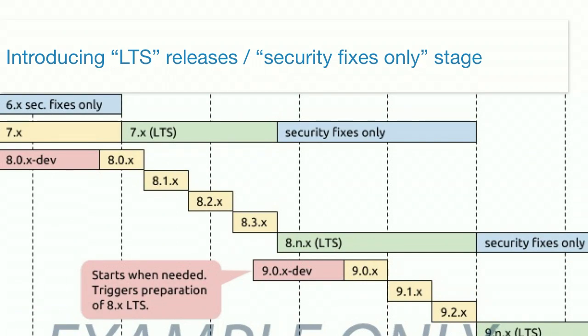We're also introducing the concept of a long-term support release. We'll keep developing Drupal 8 minor releases until we can't anymore, at which point we'll branch Drupal 9. The last minor release before that will go into LTS mode — no new features, just bug fixes, critical issues, and security fixes, treated like Drupal 7 is today. That's really helpful for organizations that want to set up a site and forget it. As long as you move to the LTS version of Drupal 8, you should be fine until Drupal 10.